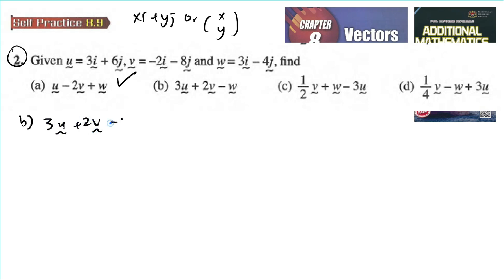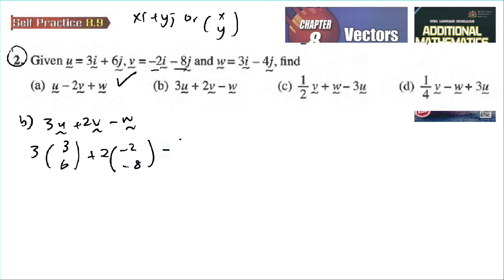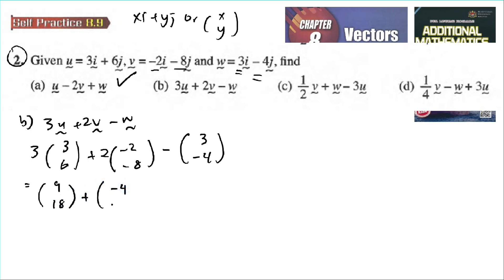For part b: 3u plus 2v minus w. So u is (3, 6), v is (negative 2, negative 8), and w is (3, negative 4). Expanding: 3 times 3 gives 9, 3 times 6 gives 18, 2 times negative 2 gives negative 4, 2 times negative 8 gives negative 16, then minus (3, negative 4).